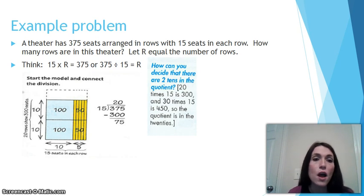So this rectangle represents 300 of the seats that we have in this theater. And you can see it's divided up into a block of 100, another block of 100, and two blocks of 50. And so really all this is showing is you can see how the seats can be divided up. So if you look over here to where it talks about how can you decide that there are two tens in the quotients, 20 times 15 is 300, and 30 times 15 is 450. So the quotient is going to be in the 20s. So they aren't doing the exact problem right now. They're just looking to see what would be reasonable in connecting a visual model to make sure that our division makes sense.